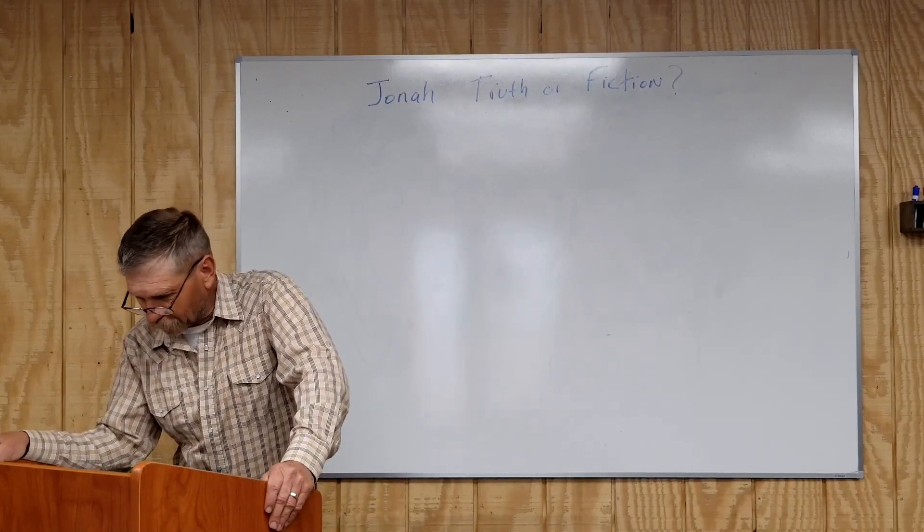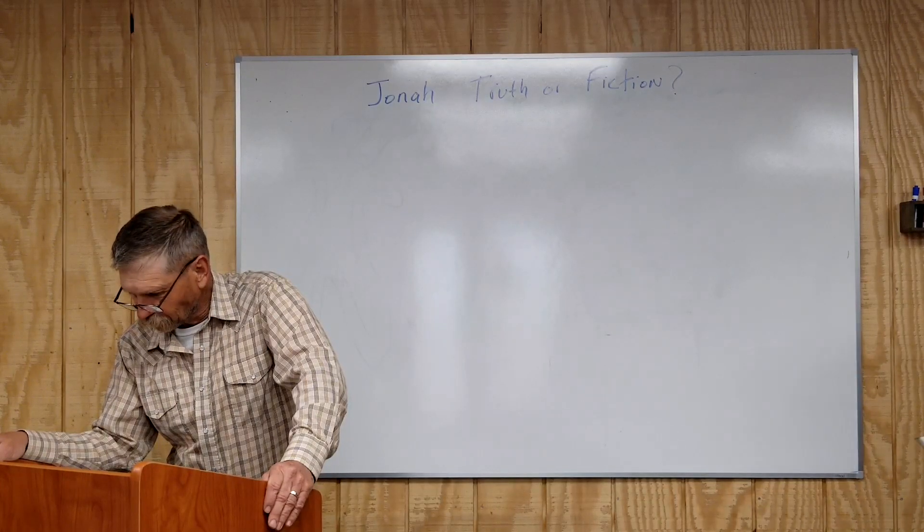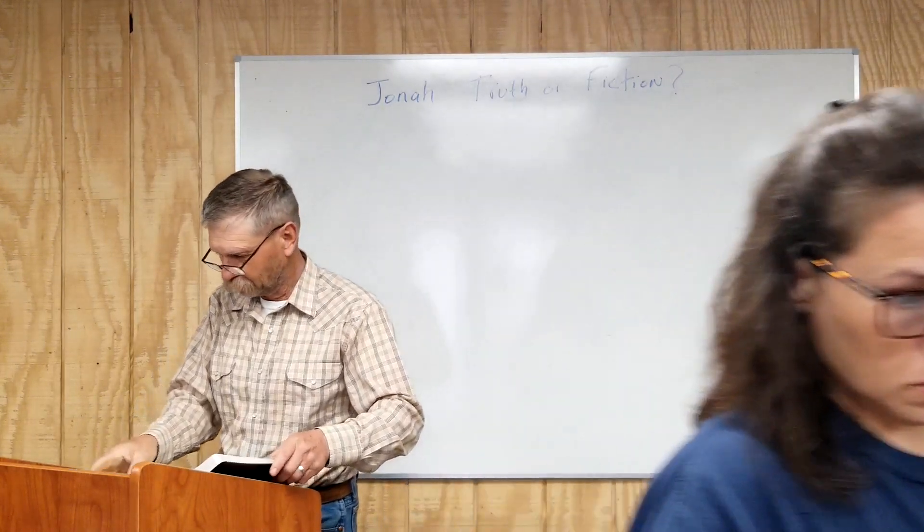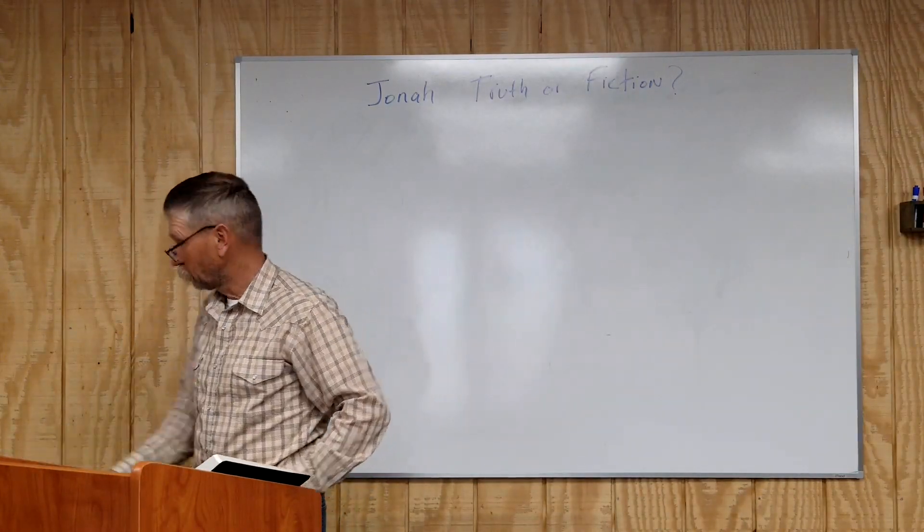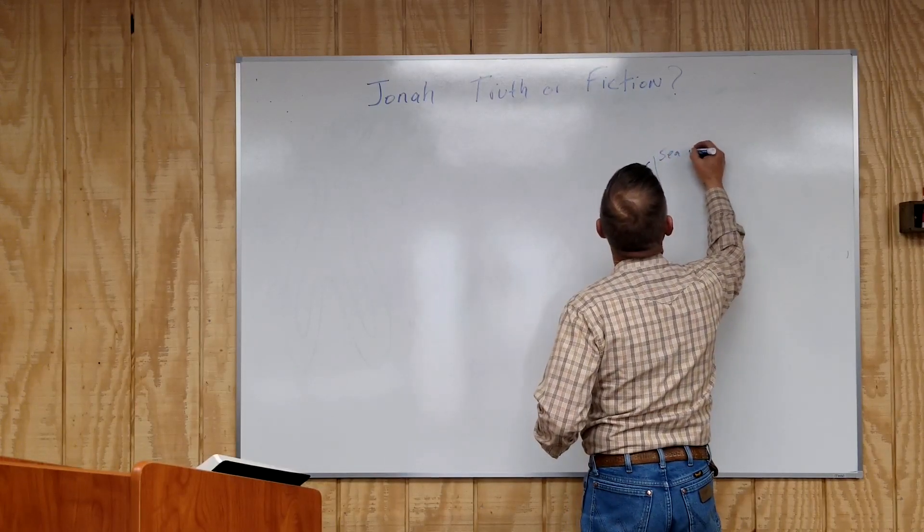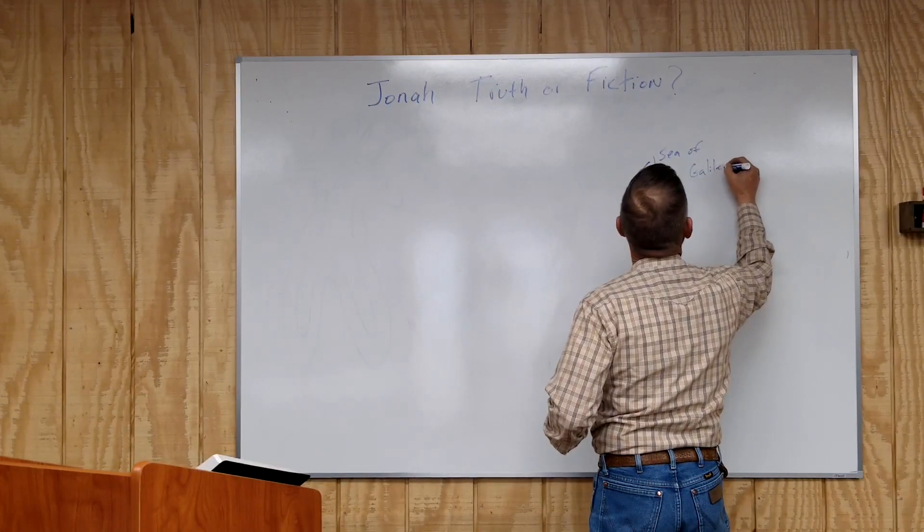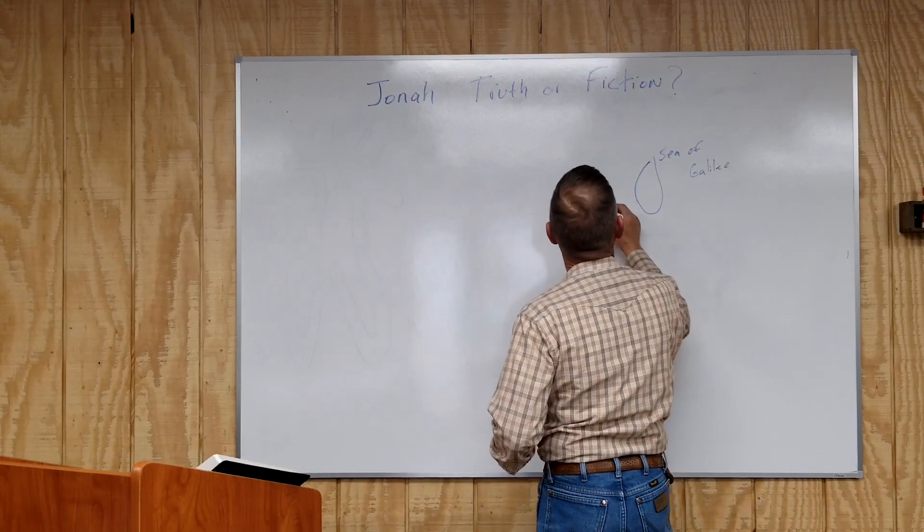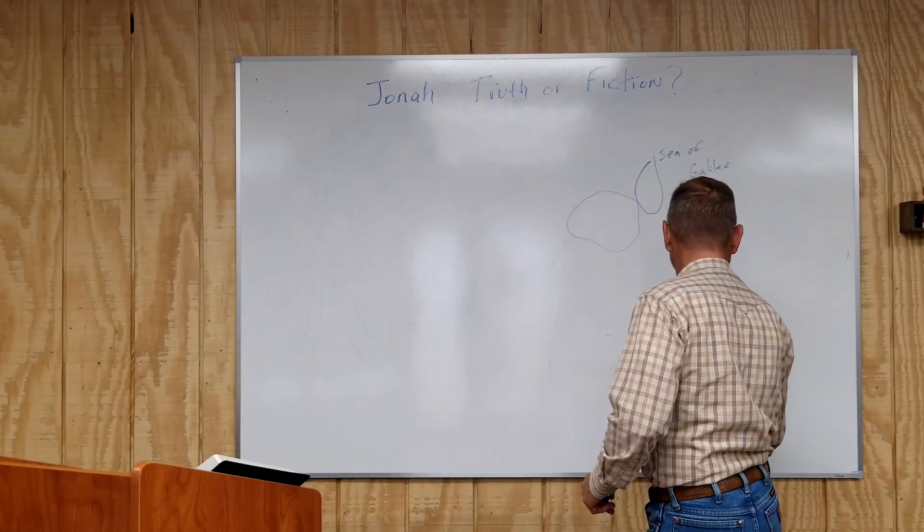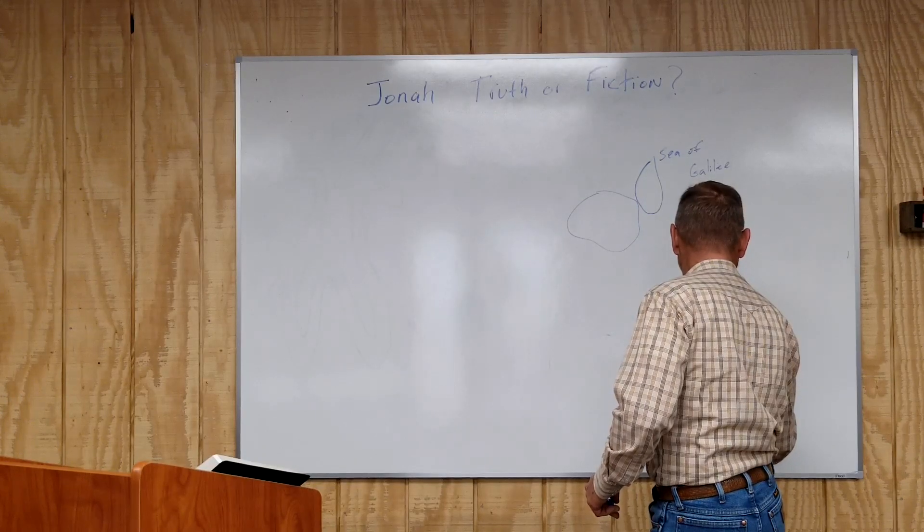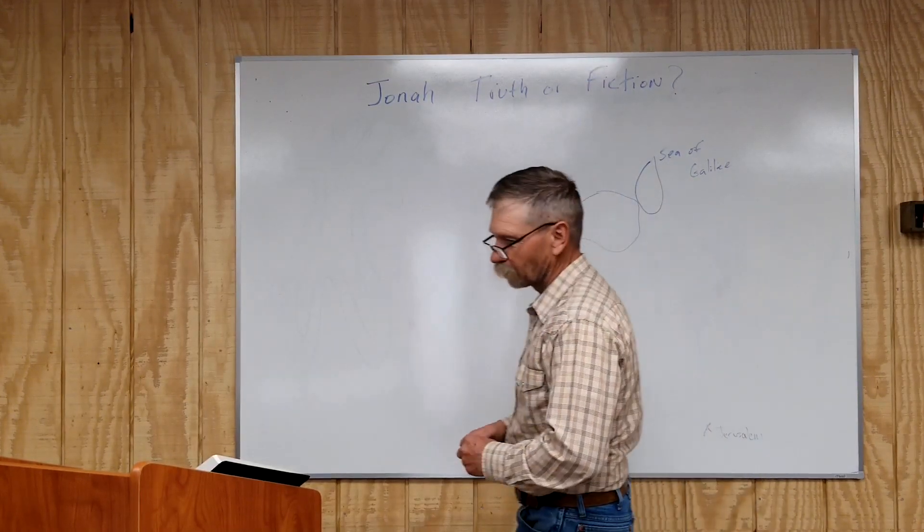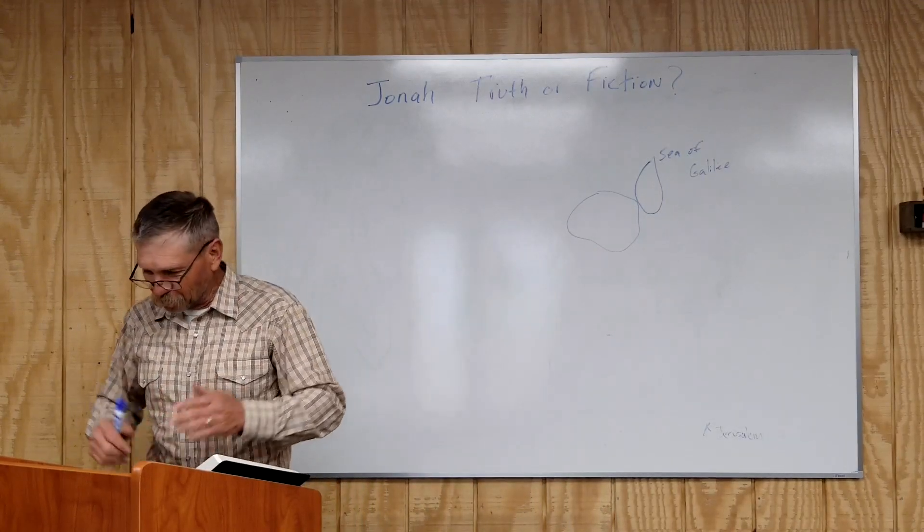And so let's look at who Jonah was and where he came from. And so somebody read Joshua 19:10. The third lot came out of the children of Zebulun according to their families, and the border of their inheritance was as far as Sarid. And from there it passed along the east of Gath-Hepher. Good job.